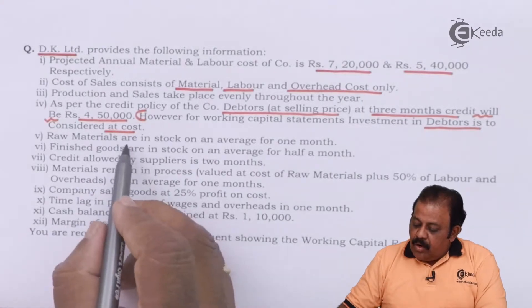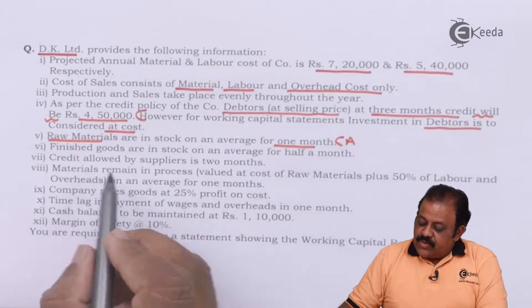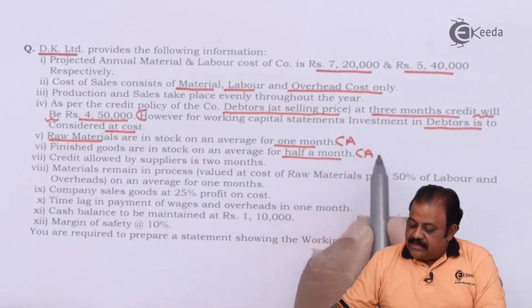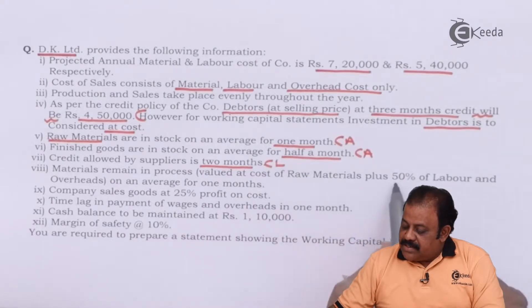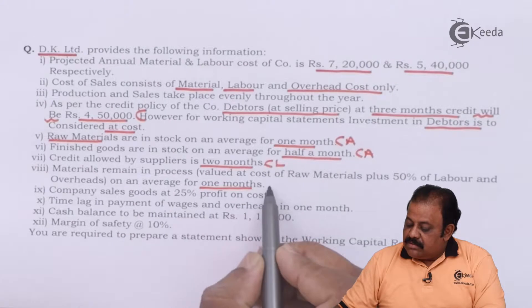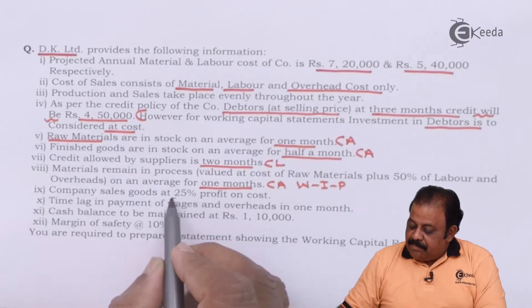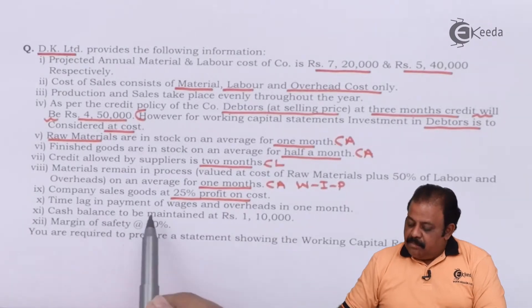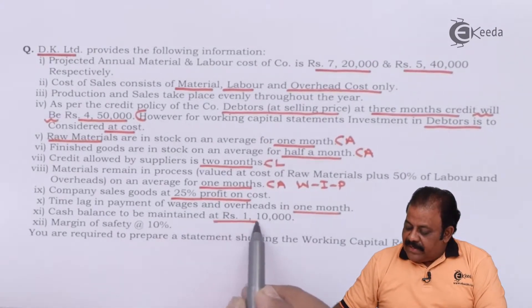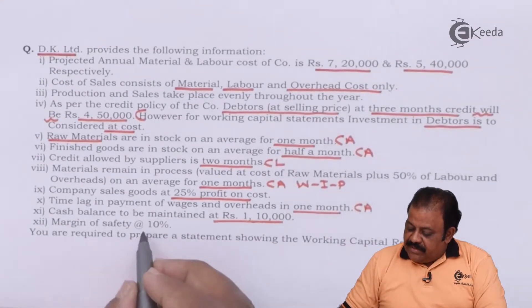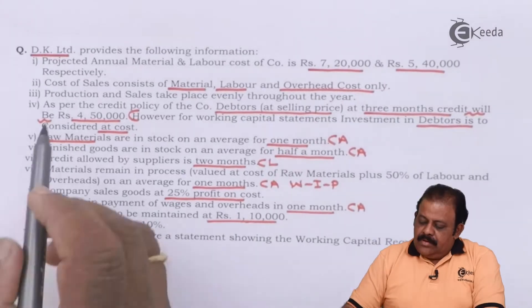However, for working capital statement, investment in debtors is to be considered at cost. Raw materials are in stock on an average for one month — this is part of current assets. Finished goods are in stock on an average for half month — current asset. Credit allowed by suppliers is two months — current liability. Material remains in process valued at cost of material plus fifty percent of labor and overheads on an average for one month — this is WIP current asset information. Company sells goods at twenty-five percent profit on cost. Time lag in payment of wages and overheads is one month. Cash balance is to be maintained at one lakh ten thousand. Margin of safety ten percent. You are required to prepare a statement showing the working capital requirement.